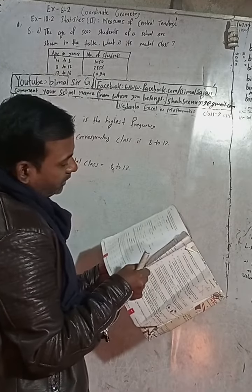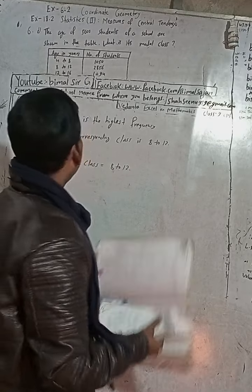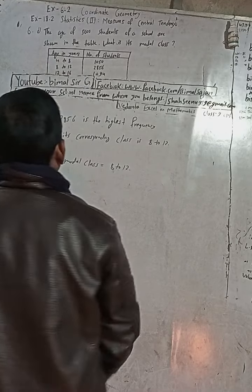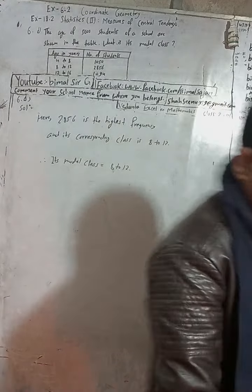Checking the answer in the book, question D shows 8 to 12. Correct, this is the solution.